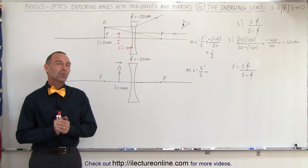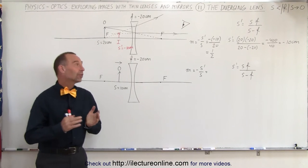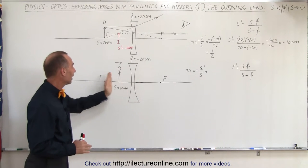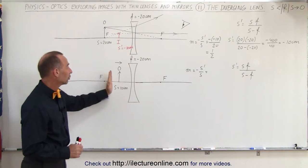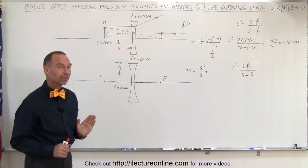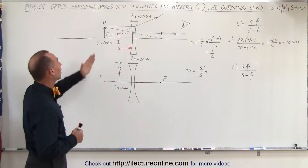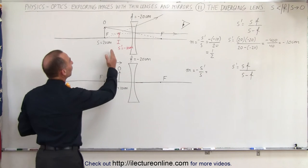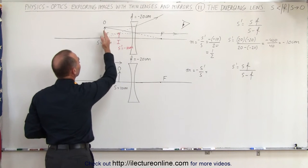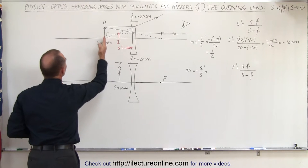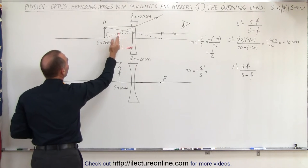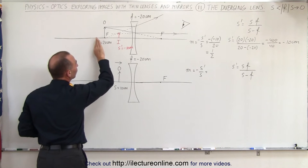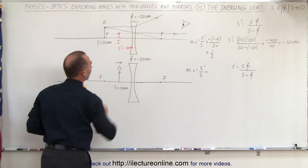Welcome to OutLectureOnline. In this video we're going to see what happens when we take the object and place it between the lens and the focal point, and keep moving it closer and closer to the lens. In the previous video we saw that when the object was beyond the focal point, the image forms somewhere between the lens and the focal point. When the object goes to infinity the image will be at the focal point, and as we bring the object closer the image begins to move closer and closer to the lens.